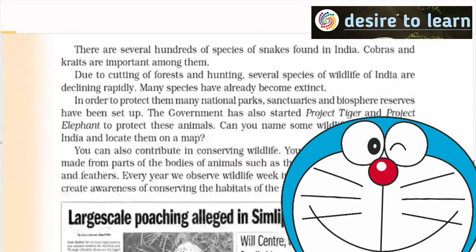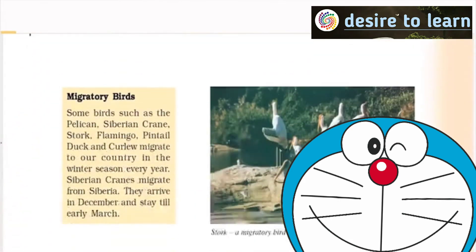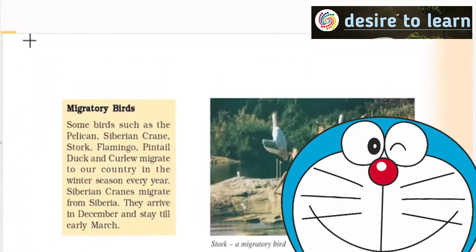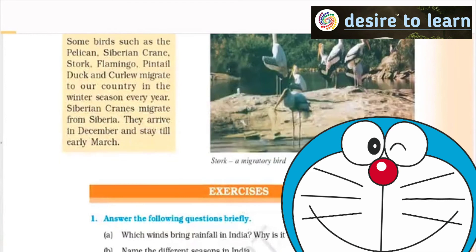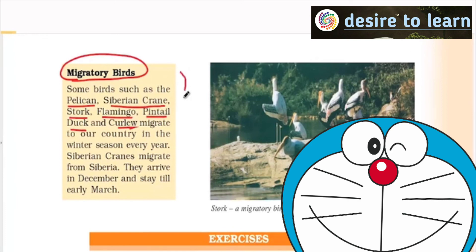We need to look at wildlife sanctuaries. Tiger is our national animal. Peacock is our national bird. Migratory birds: some birds such as pelican, Siberian crane, stork, flamingo, pintail duck, and curlew migrate — very, very important. Just try to remember the migratory birds.